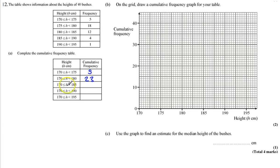And 170 to 185, we want to add on that 12 to the 23, which gives us 35. 170 to 190, we're going to add that 4 on, which is 39. And finally, 170 to 195, it's going to be all of these values added together, which gives us 40.